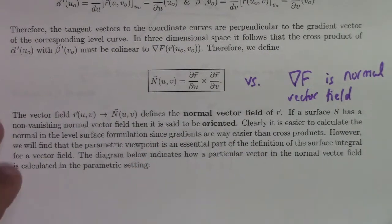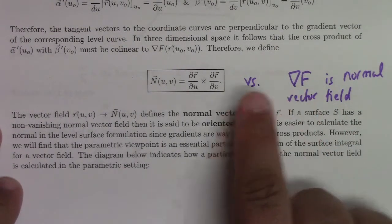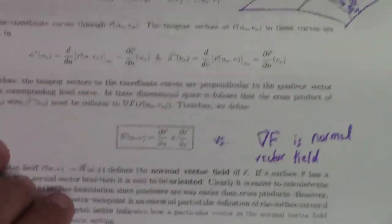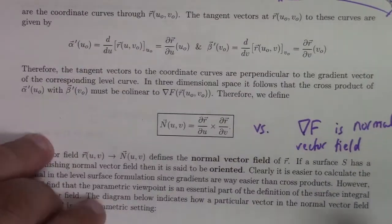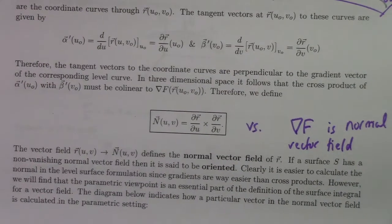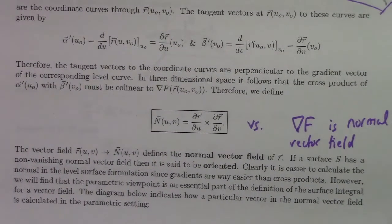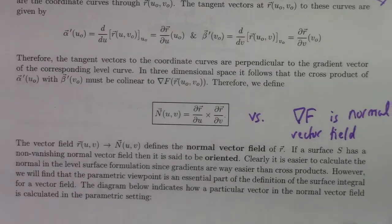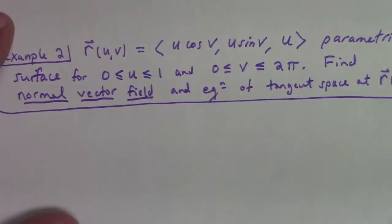To summarize: the normal vector field for a parametrized surface is given by ∂r/∂u × ∂r/∂v. This is quite a contrast to the level surface method, where the gradient of f gives the normal vector field. For a level surface the gradient is easier to calculate; for a parametrized surface the cross product of partial velocities is the method. Both are important, and sometimes the surface comes to us with a parametrization rather than an equation.